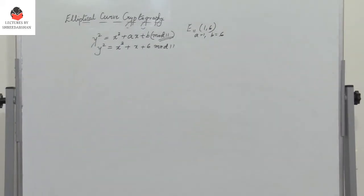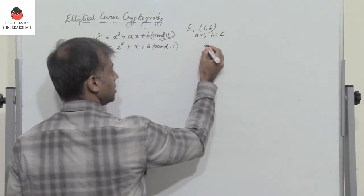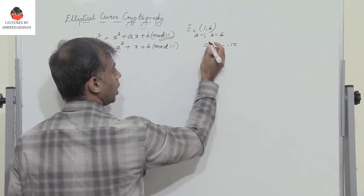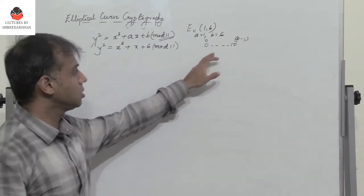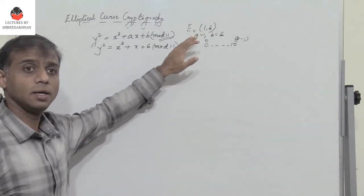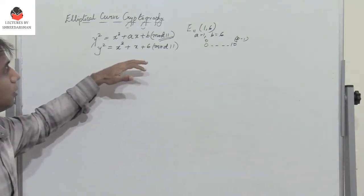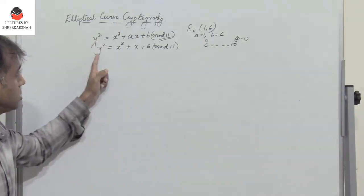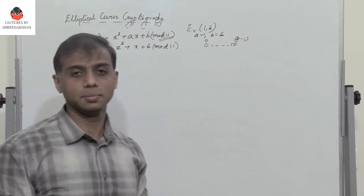So I need to find the points on this elliptic curve. Since we are operating in mod 11, we have numbers varying from 0 to 10, that is 0 to p minus 1. So the value of x can be 0 to 10, and the value of y can also be 0 to 10. I need to find the values of x and y such that LHS equals RHS. When LHS equals RHS, that point will lie on the elliptic curve.